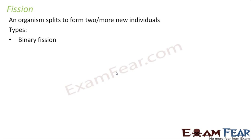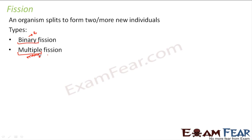The word binary means two and multiple means many. So in binary fission the organism splits to form two new individuals, and in multiple fission the organism splits to form many new individuals. This splitting can occur in a variety of ways — some organisms split along any plane, while other organisms split only along a specific plane, and some will split into two parts while others into many.